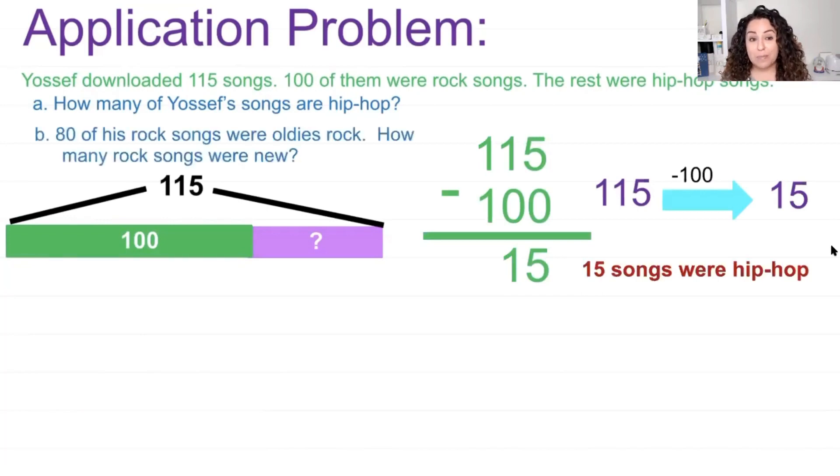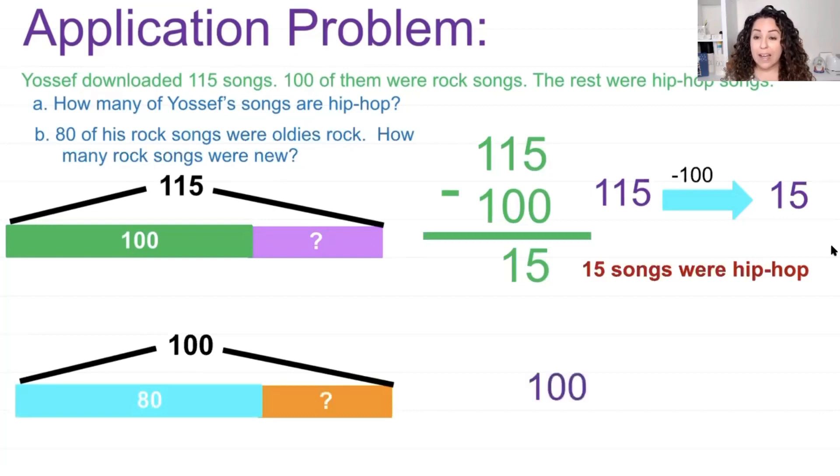Now this question has a part B. 80 of his songs were oldies rock. How many rock songs were new? So let's do another tape diagram. My whole is now 100 because I'm only counting the rock songs. And 80 of those were oldies. And how many are new? I can go ahead and have 100, make an arrow way, and I can take away 80. Let's see, 100 take away 80 is equal to 20. So 20 rock songs were new.